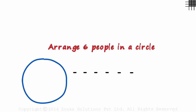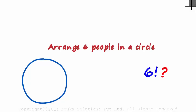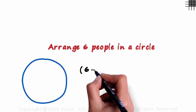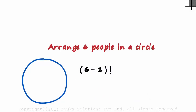If we had to arrange them in a row, we know that it can be done in six factorial ways. Will it be the same if they have to be seated in a circular fashion? Most of us know the answer here — it will not be the same. It's six minus one factorial — that many ways in which we can arrange six people in a circular fashion.